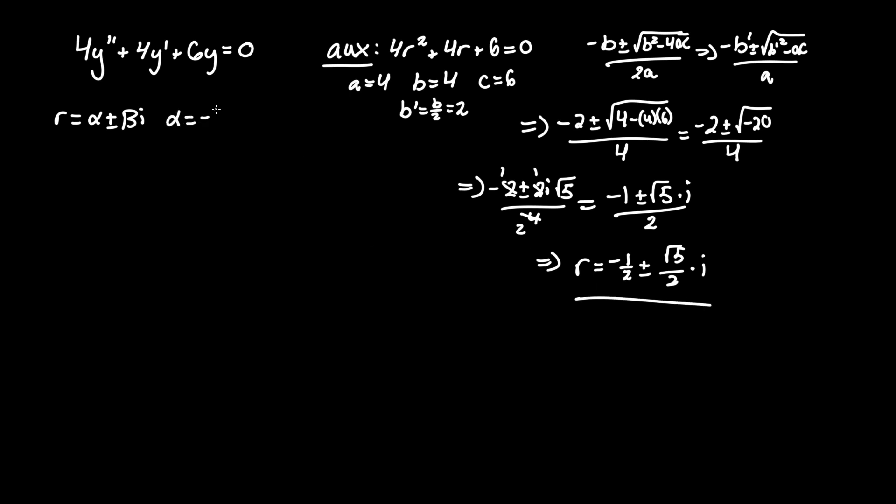Obviously from this here, α = -1/2, and β = √5/2. In this situation, y_h = e^(αt)[c₁cos(βt) + c₂sin(βt)].